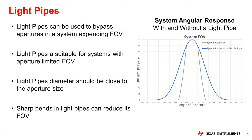To get the biggest field of view increase, light pipes should be at or slightly above the highest aperture, and the bottom should be placed directly on the sensor. Also, to maximize performance, the diameter of the light pipe should be roughly the same size as the aperture to ensure as much light as possible can enter the light pipe and reach the sensor.